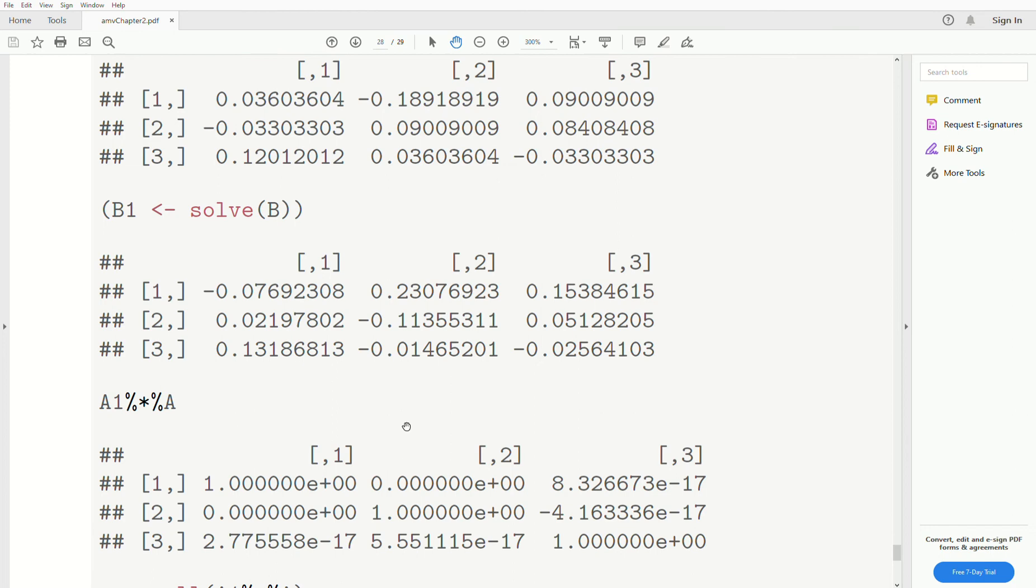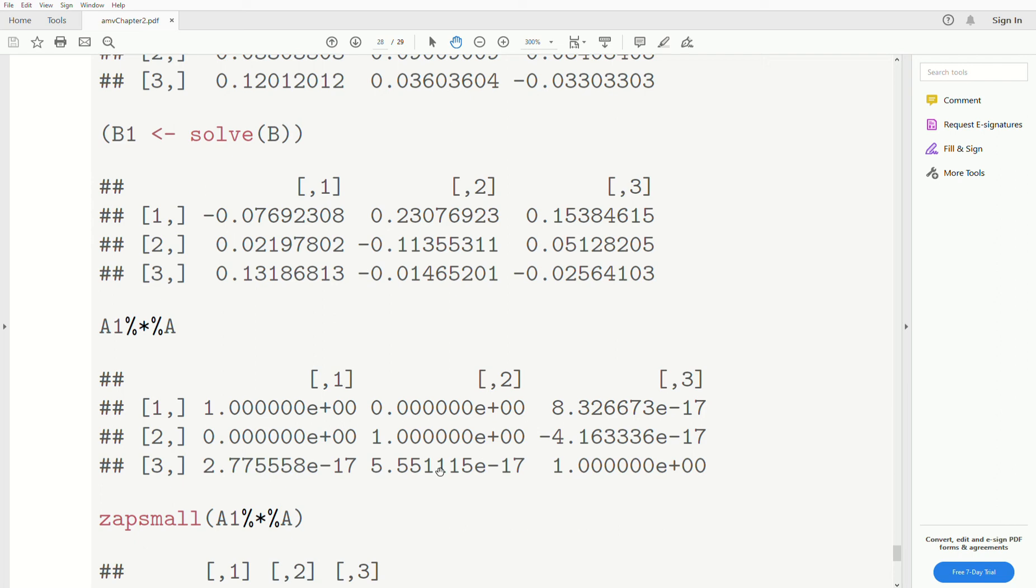Now the interesting thing, one of the things with computers is there's always rounding error. So if we take A inverse matrix product A, it should be the identity matrix. But look what we get. That doesn't look like the identity matrix. Remember, the identity matrix is a diagonal matrix with ones down the diagonal. But if we look closer, look, this is a 1. This is a 1. This is a 1. So it has ones down the diagonal.